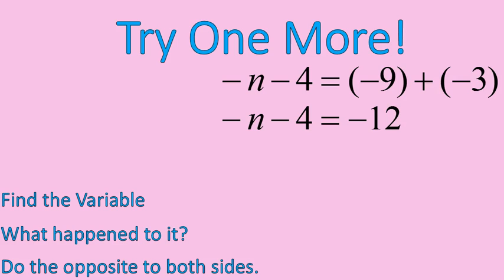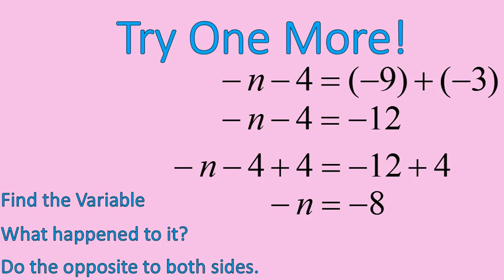All right, so where's my variable? N is my variable. What is connected to N? Negative 4. So I'm going to add 4 to both sides of this equation. Negative 4 plus 4 gives me 0. So I'm left with just negative N on the left side of this equation.